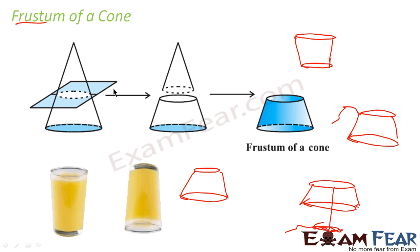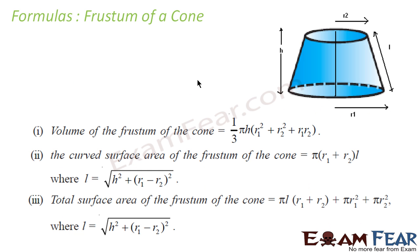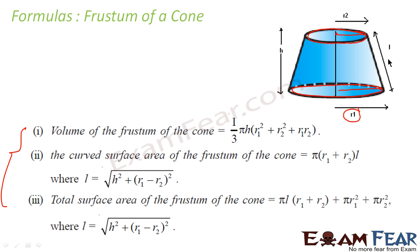So we should learn frustum. You take a cone, cut it with a horizontal line, and you get a frustum. Now for the frustum, these are the formulas you have to learn. In the frustum, by convention, the bigger radius is called r1 and the smaller one is called r2, because there are two circles. The height of the frustum is h, and the slant height of the frustum is l.